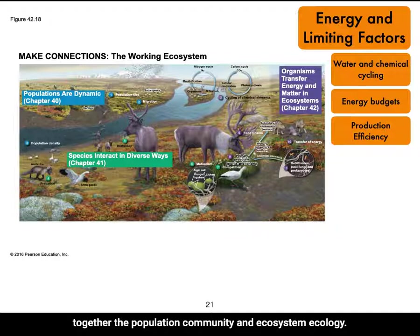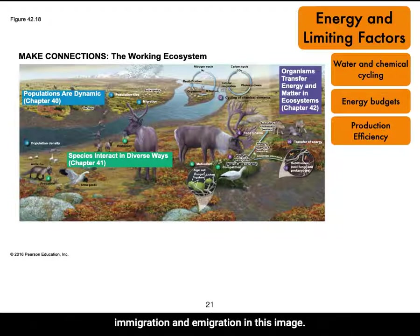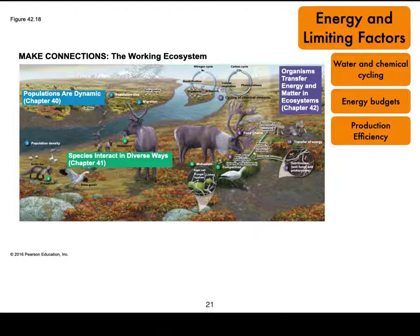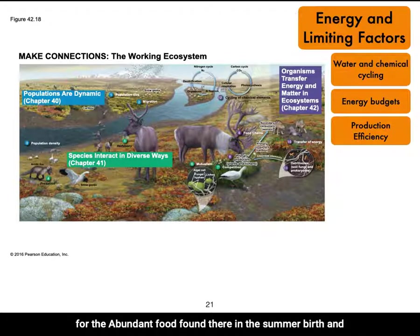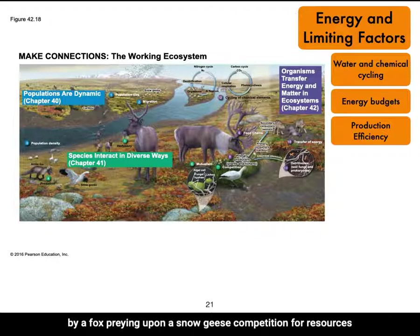From the last lecture, we learned that populations are dynamic, changing size through births and deaths, immigration and emigration. In this image, caribou migrate across the tundra to give birth at their calving grounds each year; snow geese and other species migrate to the Arctic each spring for the abundant food found there in summer. Birth and death rates influence the density of all populations. Death in the tundra comes from predation — shown by a fox preying upon snow geese — competition for resources, and lack of food in winter.